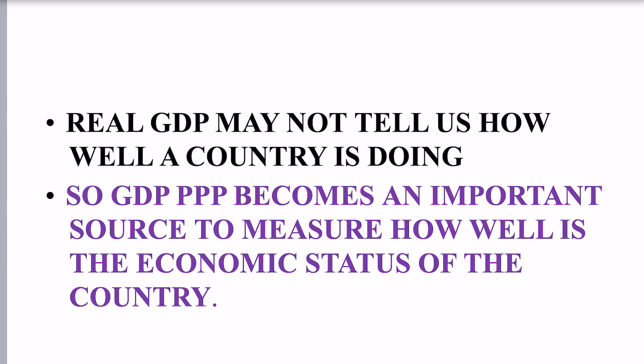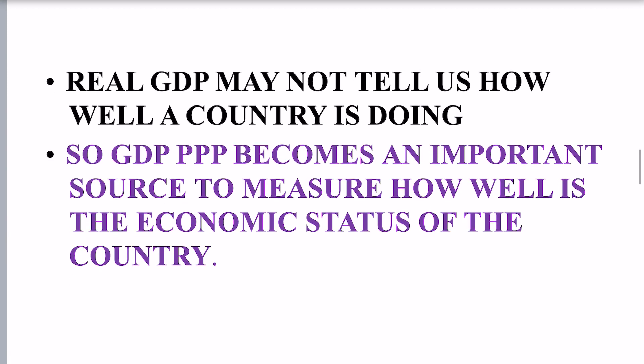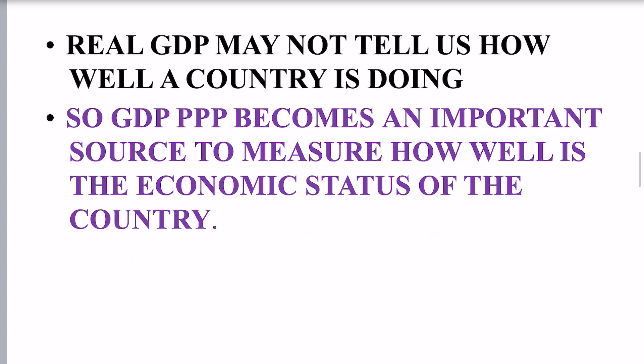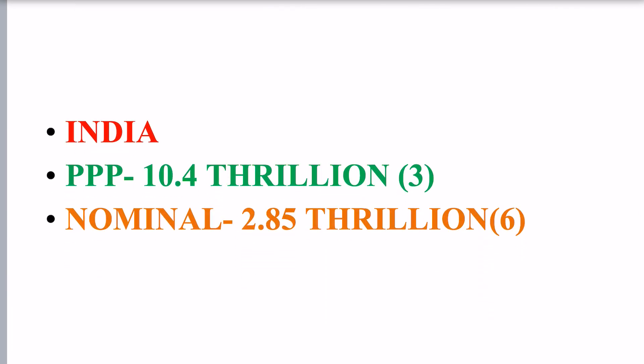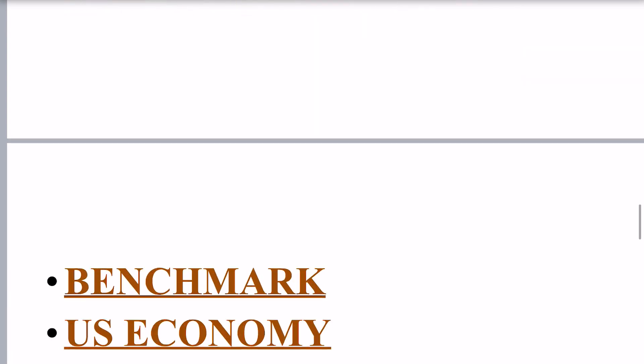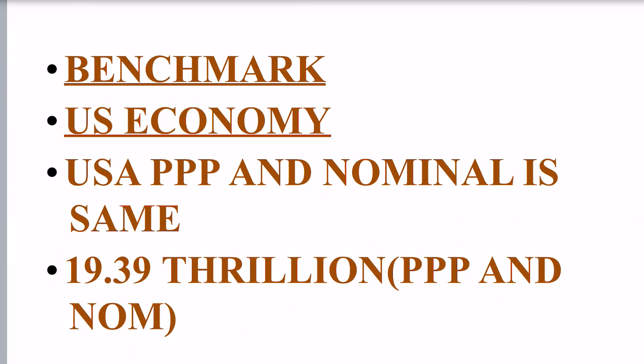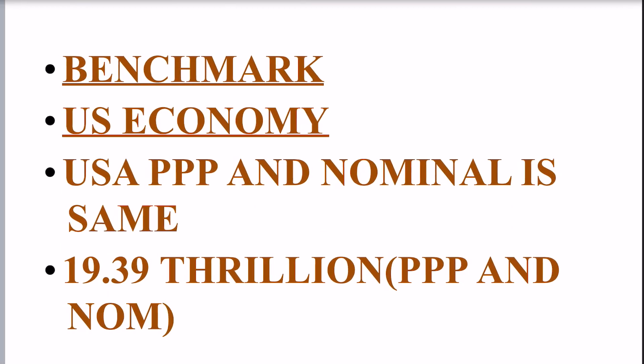So GDP PPP becomes an important source to measure how well the economic status of a country is. Like in India, the GDP PPP is $10.4 trillion, which is third in the world, and the GDP nominal is $2.85 trillion, sixth in the world. The benchmark is the US economy, and the USA has the same PPP and nominal GDP, which is $19.39 trillion.